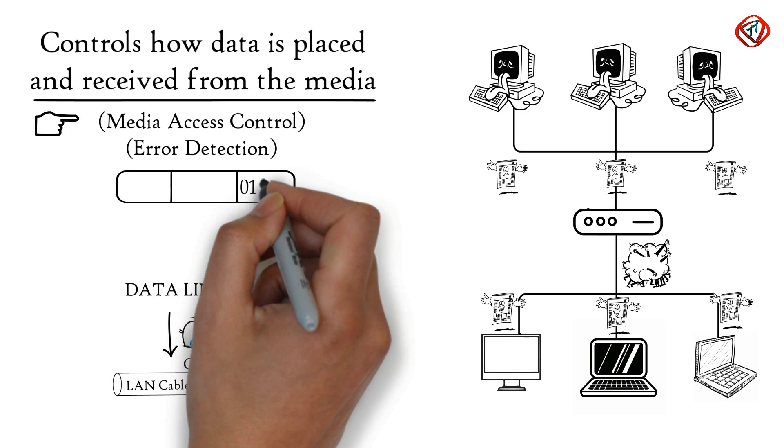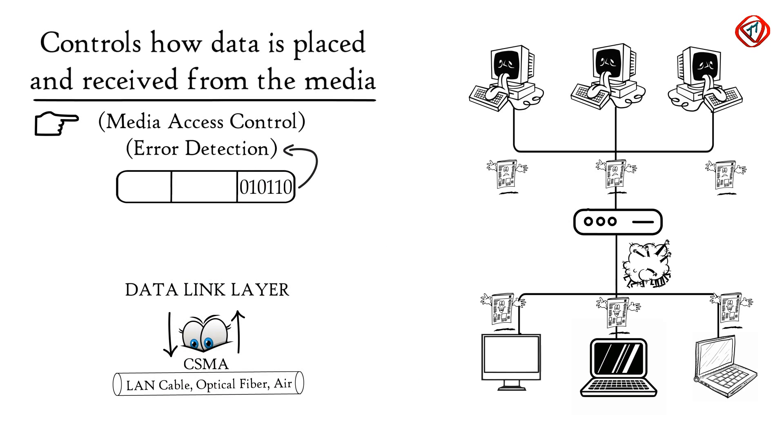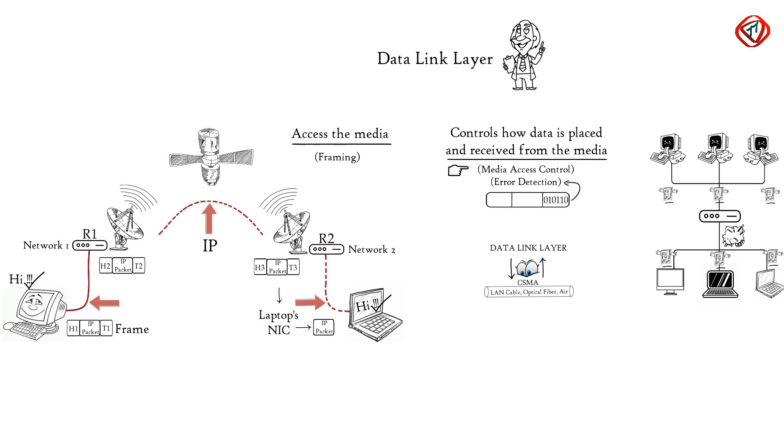Tail of each frame contains bits which are used to detect errors in the received frame. Errors occur due to certain limitations of the media used for transmitting data.